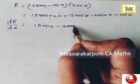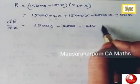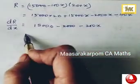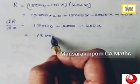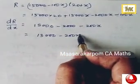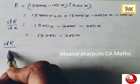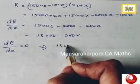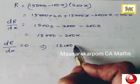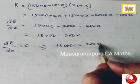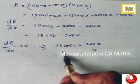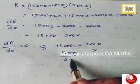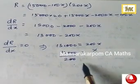Differentiation of this is 15,000 minus 2000 minus 200x. This is equal to 13,000 minus 200x. Put dR by dx is equal to 0.